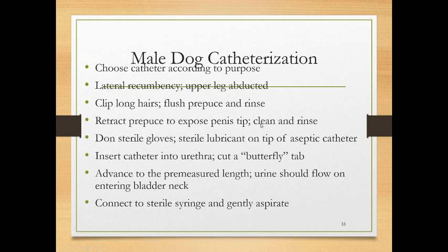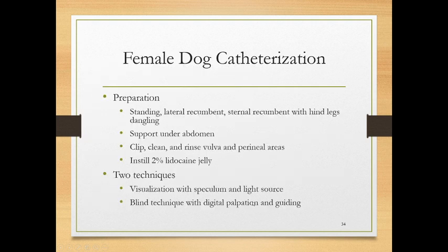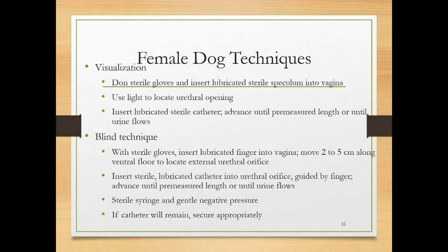Connect the catheter to a sterile syringe and gently aspirate, or connect to a collecting device. Create a butterfly tape by folding tape in half and wrapping it around the catheter hub, which can then be sutured in place. Female dog catheterization is harder — you need a speculum with a light source, sterile gloves, and very specific placement. It can be done blindly with practice. Male cat catheterization is done when there's a urethral obstruction, typically from mucus. Place the animal under sedation or general anesthetic for adequate relaxation.